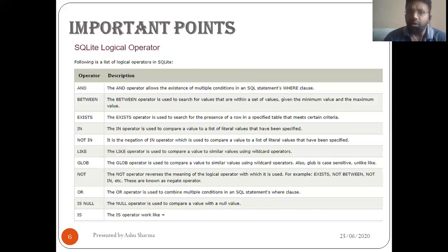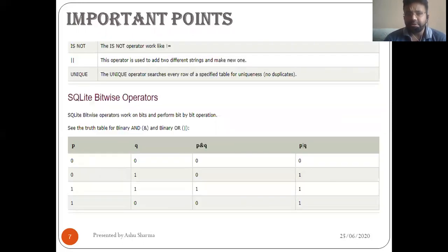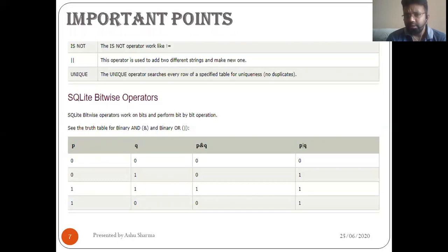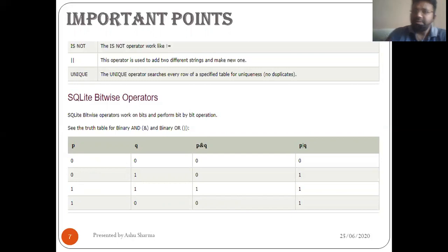IS NOT works like not-equal. The IS operator is used to concatenate two different strings and make a new unique one. The UNIQUE operator searches every row of a specified table for uniqueness — it ensures there is no duplicacy or redundancy.